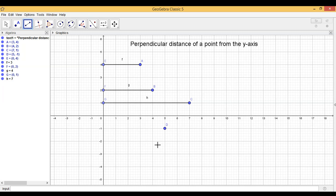the coordinates of point D are 5, -1. So what is the perpendicular distance of point D from the y-axis? Yes, you are right. It will be equal to 5.